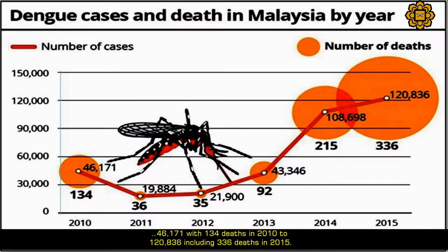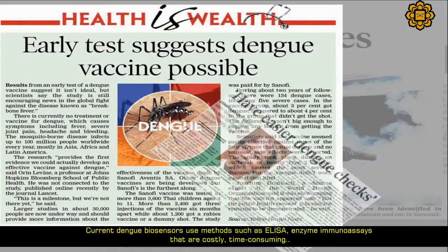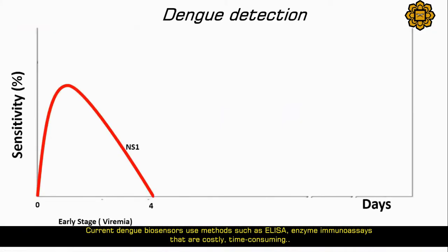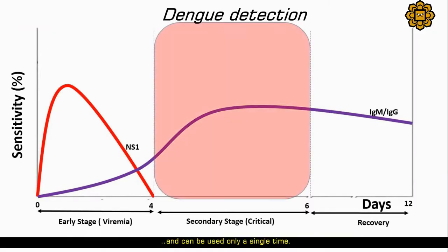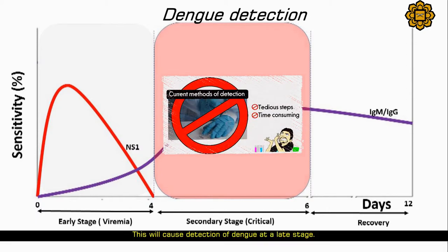Cases rose from 46,171 with 134 deaths in 2010 to 120,836 with 336 deaths in 2015. Current dengue biosensors use methods such as ELISA enzyme immunoassays that are costly, time-consuming, and can be used only a single time. This causes detection of dengue at a late stage.